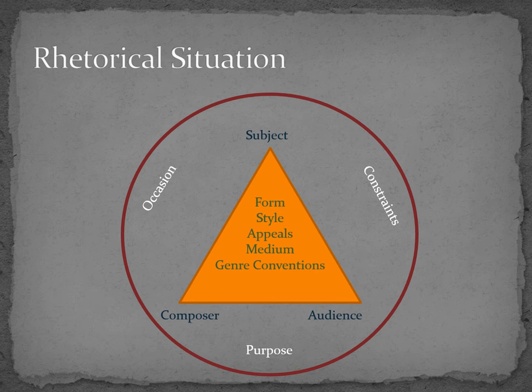The rhetorical situation is very complex because there are so many individual parts we can examine in order to draw a conclusion about how successful a text or its author are. Let's look a bit at some of the two more complicated elements of the rhetorical situation in detail: rhetorical appeals and genre conventions.